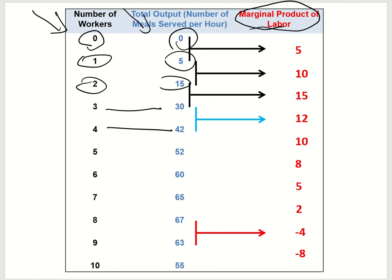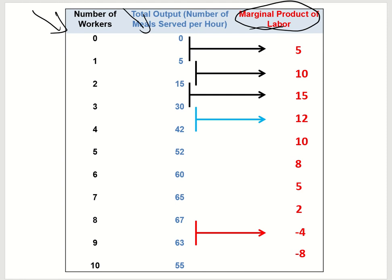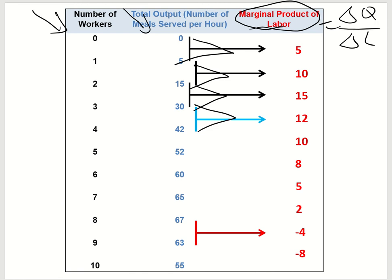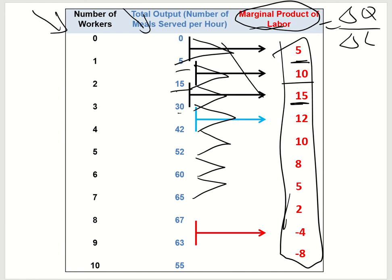This brings us to the marginal product of labor — how many additional outputs do you get from each additional worker hired. The formula is the change in quantity produced over change in labor. The easiest way: just find the difference between each level of total production. Between 0 and 5 is 5. Between 5 and 15 is 10. Between 15 and 30 is 15. So marginal product is just the difference between each level of total product.